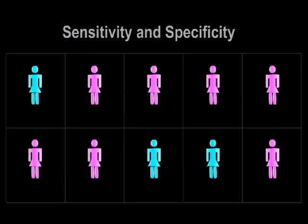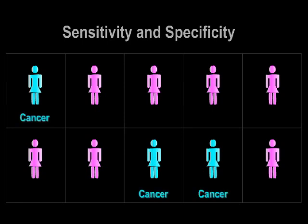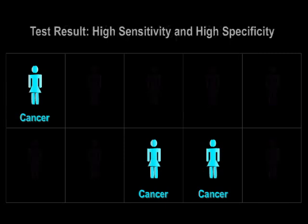These terms are best defined by an example. Suppose that ten women undergo a test to detect cancer and three of these women have the cancer. If the test accurately detects all three cancers and does not incorrectly flag any of the normal individuals, then it has both high sensitivity and specificity.